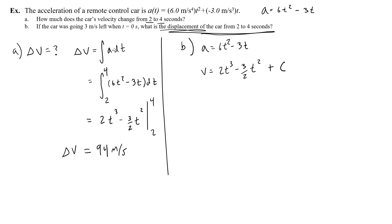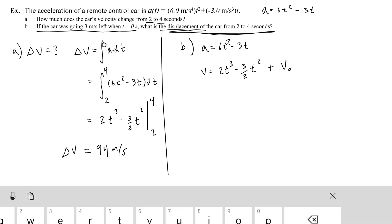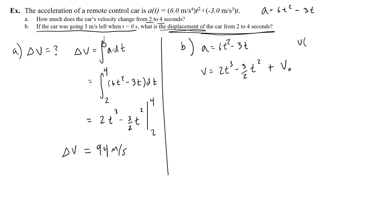The constant of integration is always like the y-intercept, or the initial value of the function. For velocity, that constant is v0. The car was going 3 meters per second to the left when t equals 0, so v(0) equals negative 3, meaning v0 equals negative 3. I replace v0 with negative 3 in my velocity equation, and now I can find the displacement from 2 to 4 seconds.